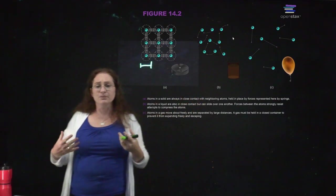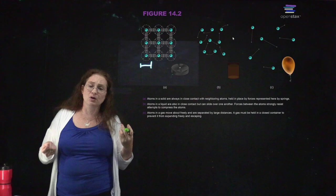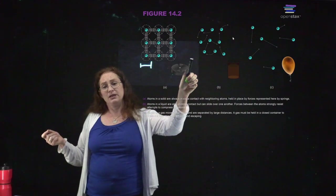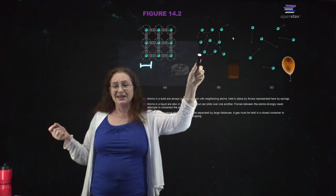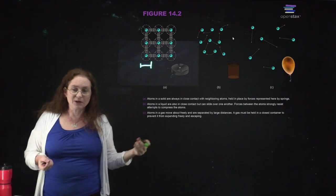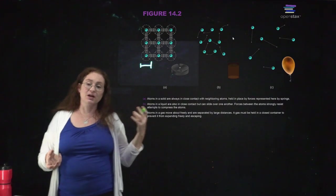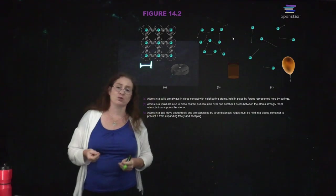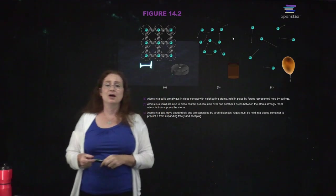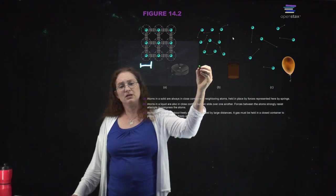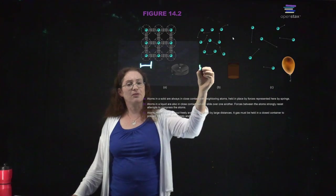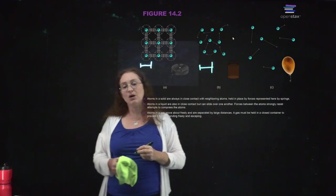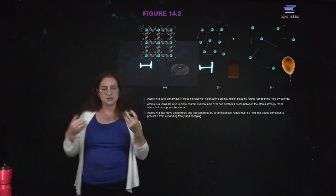In a liquid, you still have the atoms and molecules close together, and the interactions between them are quite strong, but they're not fixed — they can move relative to each other. So any given molecule of water in a glass of water has a lot of interactions with many other molecules, but exactly which molecules changes because the molecules are moving inside the liquid.